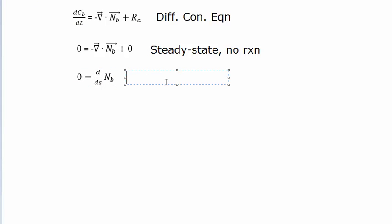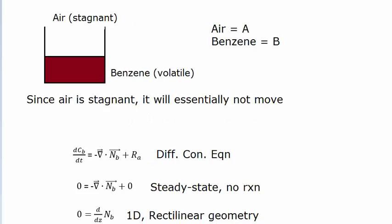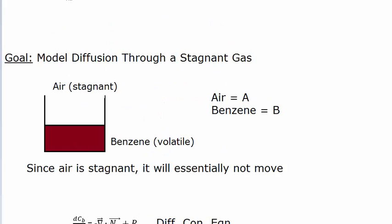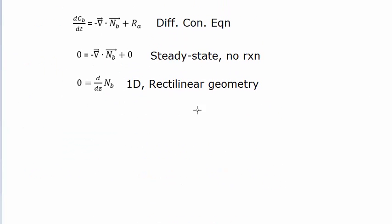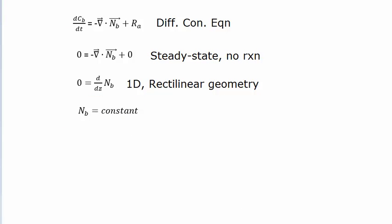We're using a one-dimensional model, or rectilinear (Cartesian) geometry, saying that the only movement possible is in the z direction — vertically up or down. Since the derivative with respect to z is zero, that means N_sub_B, the total flux of species B (sometimes referred to as the convective flux of species B), is constant.